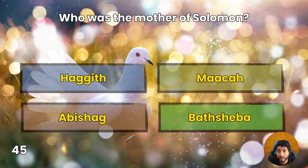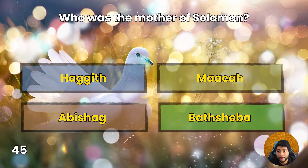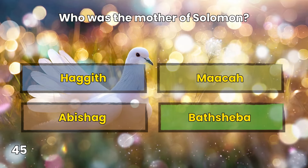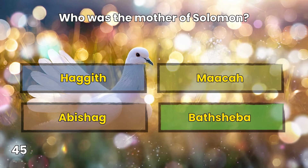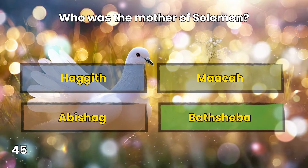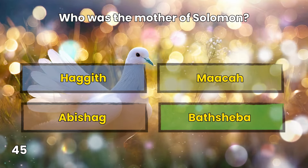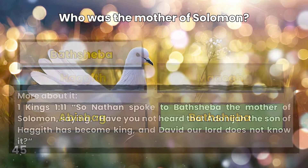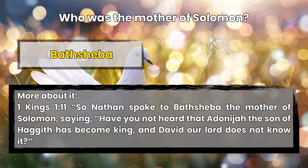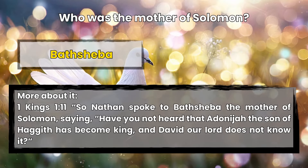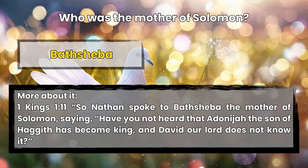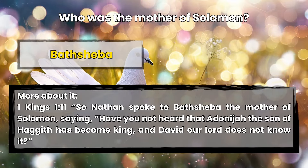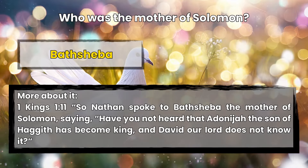Question 45: Who was the mother of Solomon? Haggith, Maacah, Abishag, or Bathsheba? Bathsheba. 1 Kings 1:11 — So Nathan spoke to Bathsheba, the mother of Solomon, saying, 'Have you not heard that Adonijah, the son of Haggith, has become king? And David our lord does not know it.'